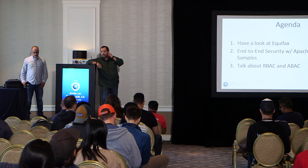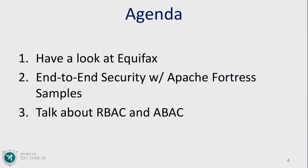We're going to have a look at Equifax and the software breach that happened last year in order to set the stage and provide the rationale for what follows. Then we're going to have a look at a couple of examples under Apache Fortress, and talk about role-based access control and how it can be improved by putting a little bit of A back in there.